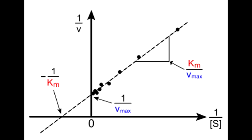What happens if km moves to the right? If km moves to the right there would be a decrease in affinity. As we know that the higher the km the lower the affinity.